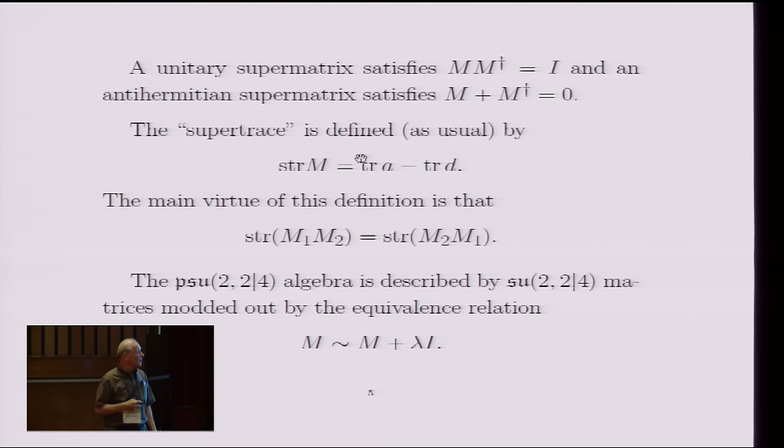And an antihermitian supermatrix is one for which M plus M^dagger is 0 with this definition of the super matrix. And the super trace is defined by the usual formulas as the difference of the traces of the bosonic blocks. And the advantage of this definition of the super trace is that you get the usual cyclic formula for moving things around.